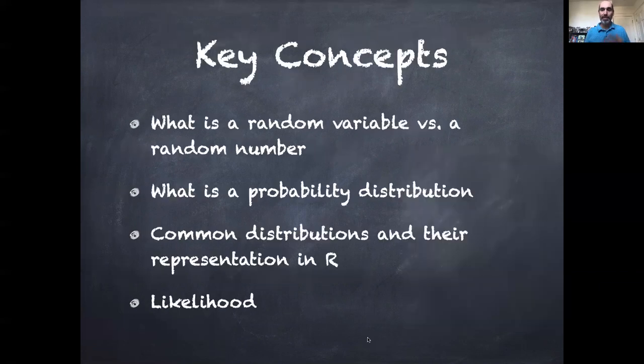So to kind of wrap everything up, the key concepts in this lecture series were about random numbers versus random variables. Random numbers are draws from that distribution; random variables are variables that can take on different values. Talked about probability distributions, functions that assign probability to random variables. They have to sum or integrate to one. They can't be negative. We talked about common distributions and how to represent them in R, and we talked about the concept of likelihood.